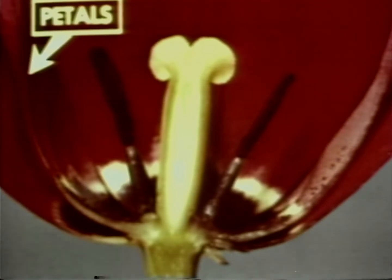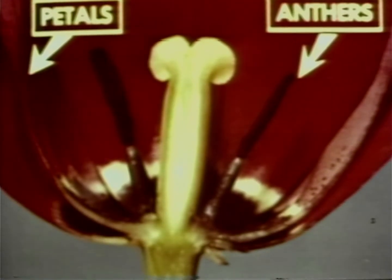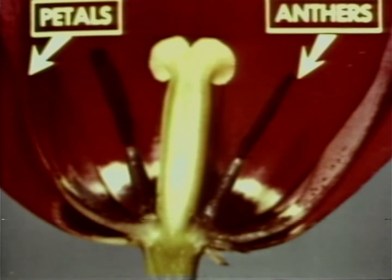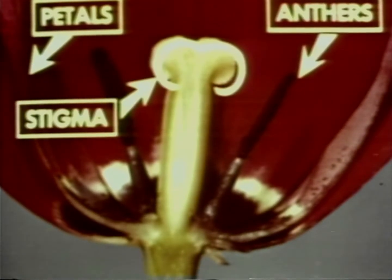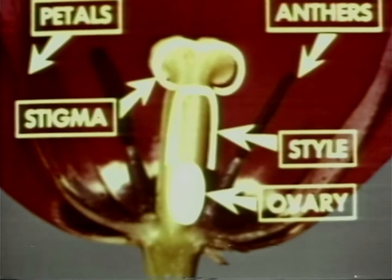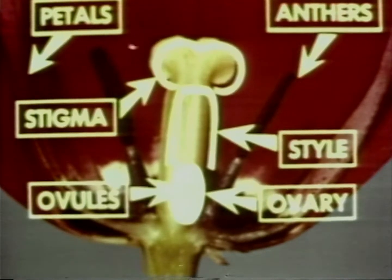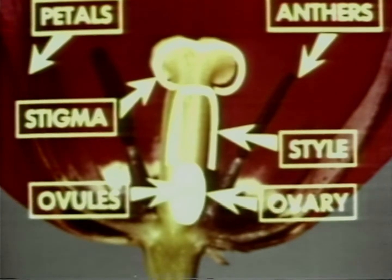At the top of each stamen is the anther. Anthers contain pollen. At the top of the pistil is the stigma, below the style and ovary. Inside the ovary are ovules which contain the egg cells.